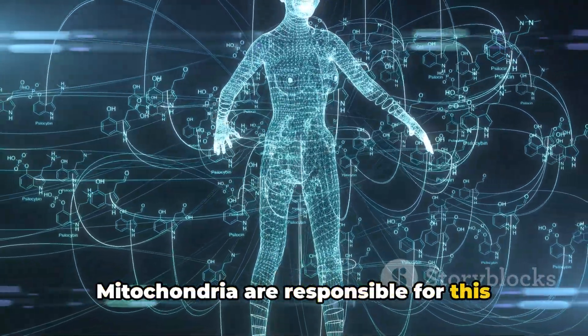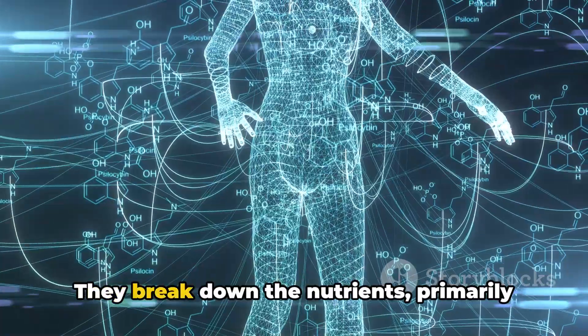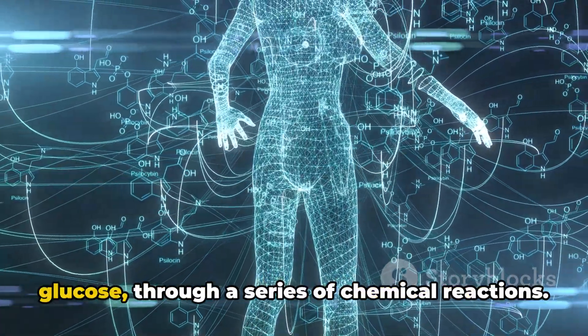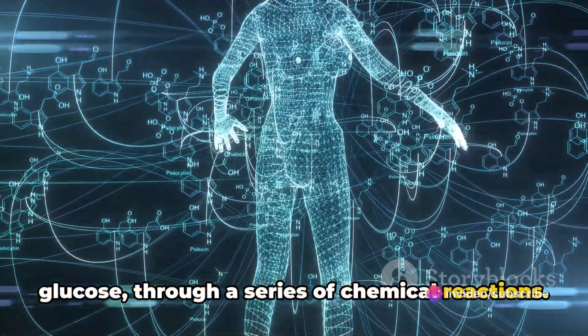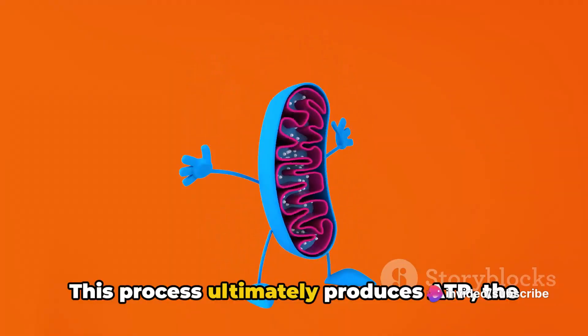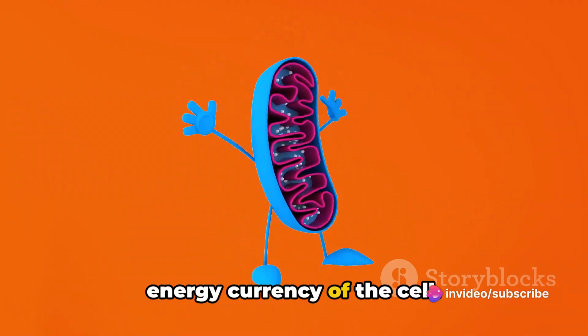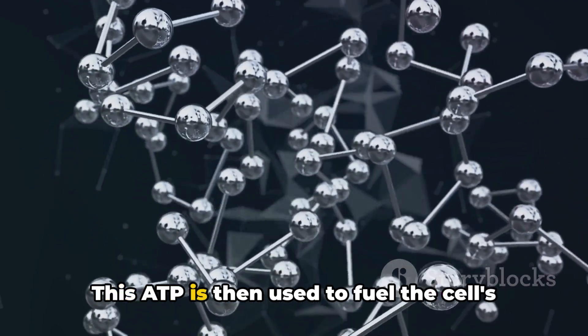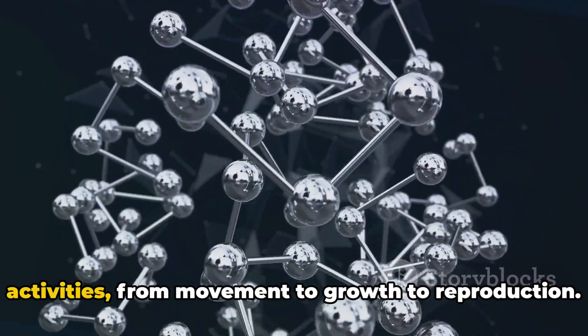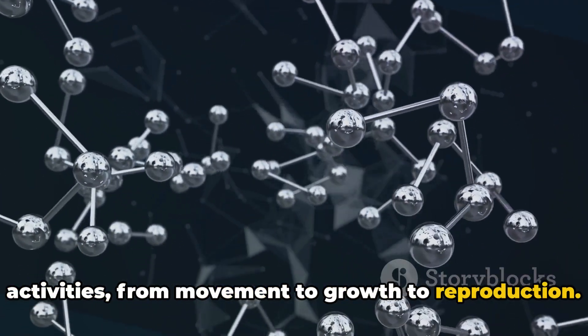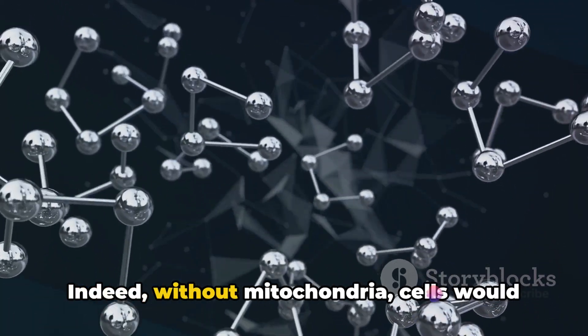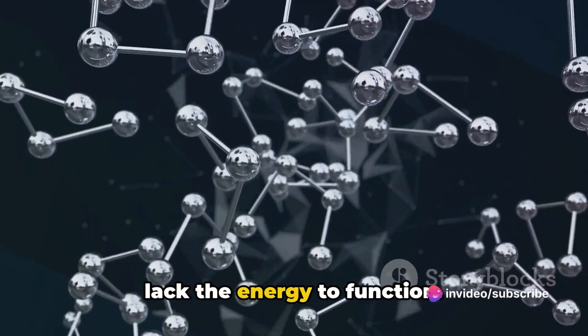Mitochondria are responsible for this crucial conversion. They break down the nutrients, primarily glucose, through a series of chemical reactions. This process ultimately produces ATP, the energy currency of the cell. This ATP is then used to fuel the cell's activities from movement to growth to reproduction. Without mitochondria, cells would lack the energy to function.